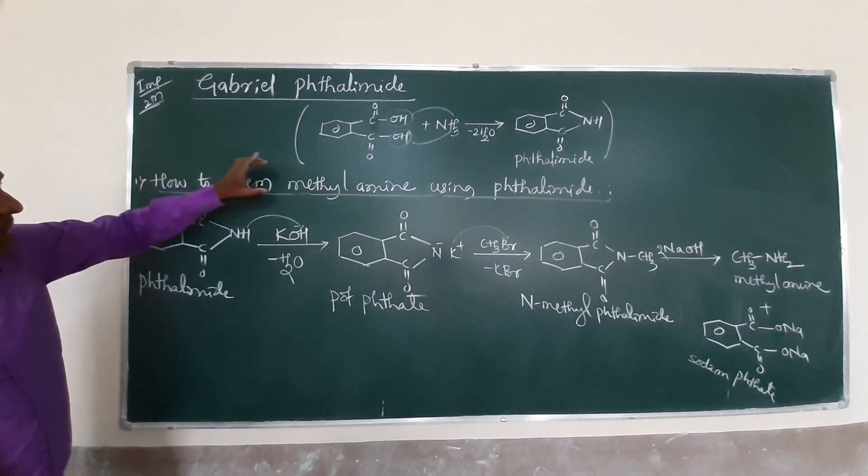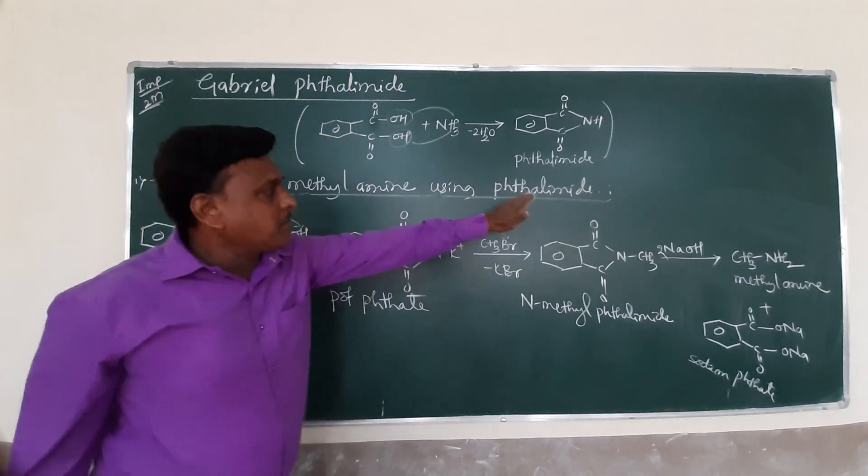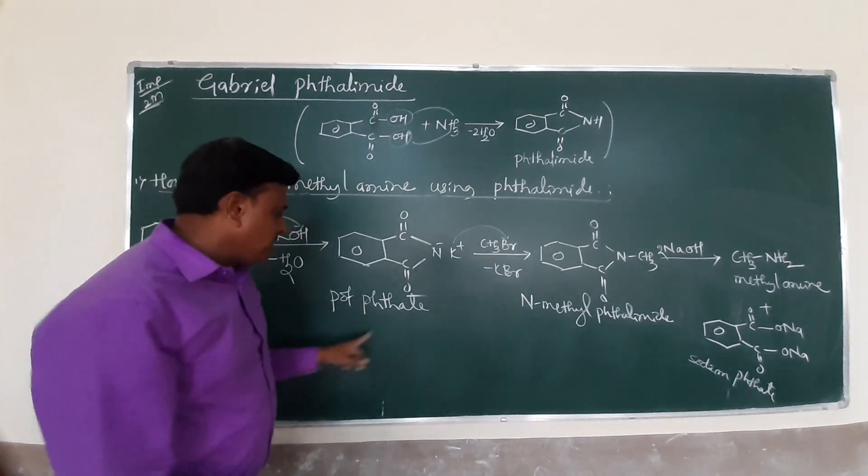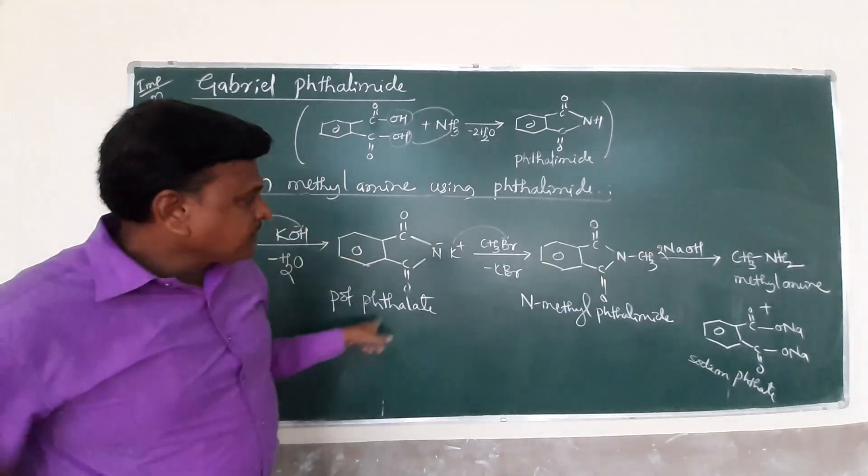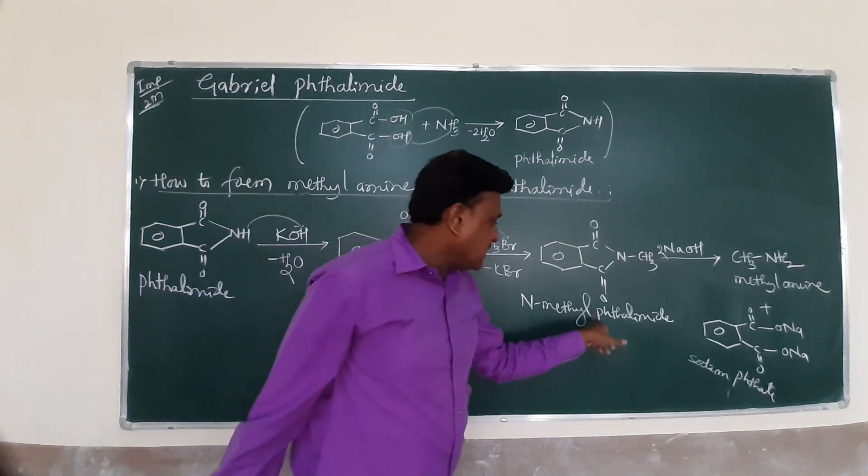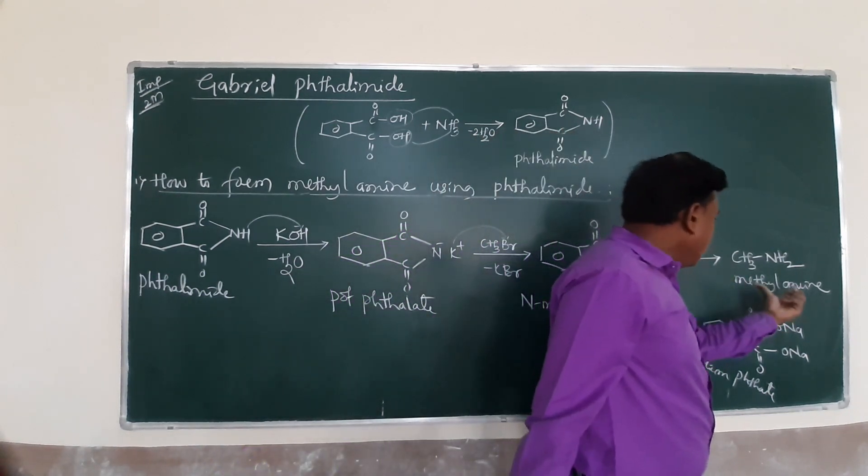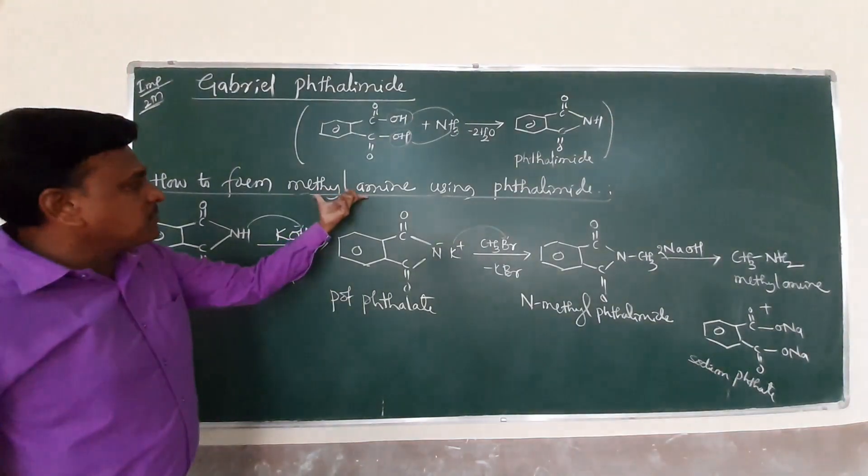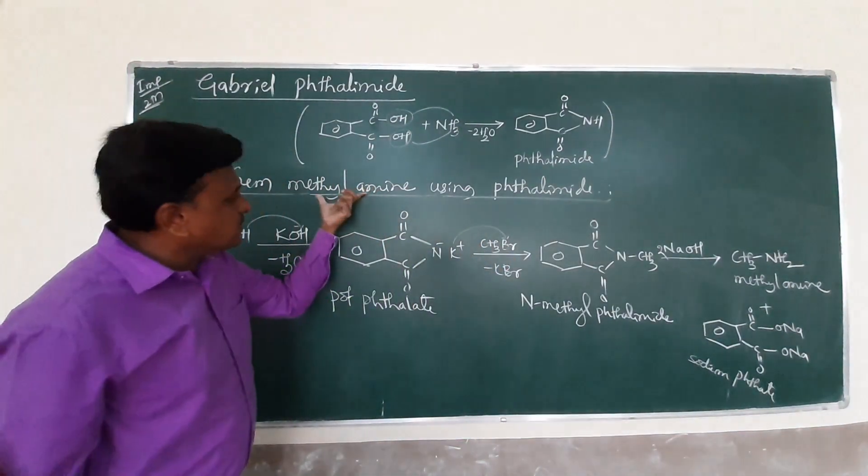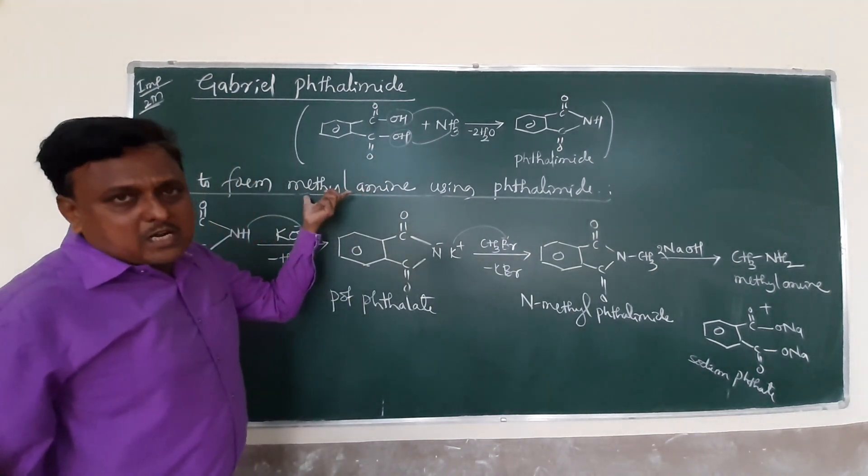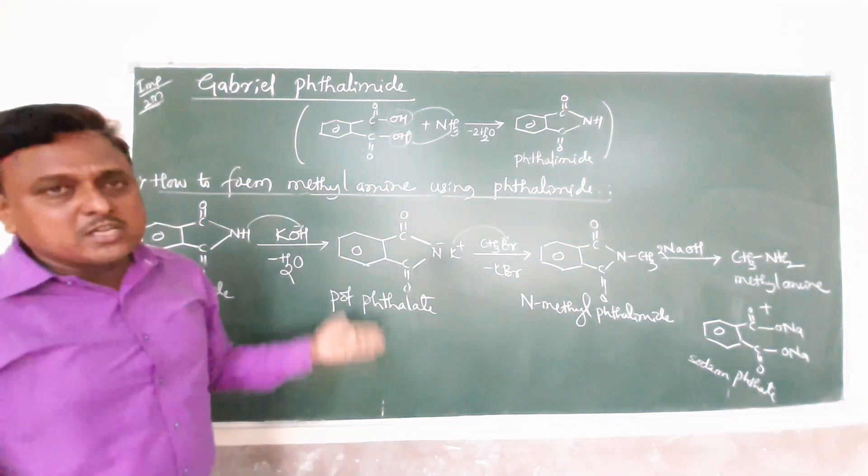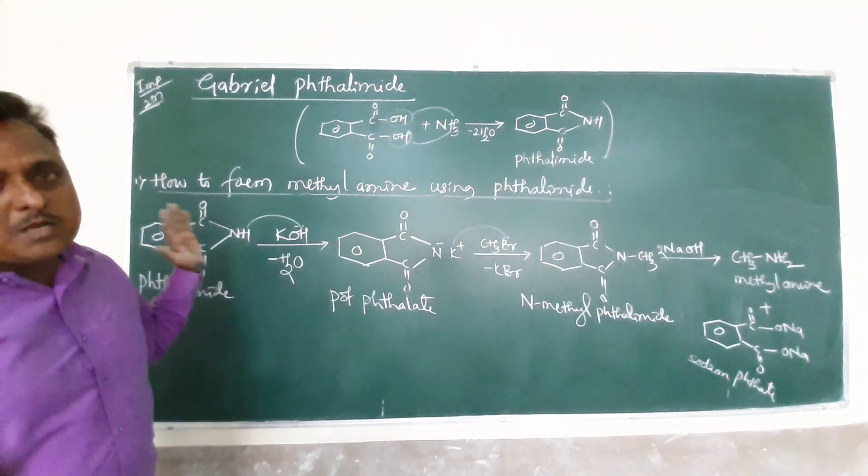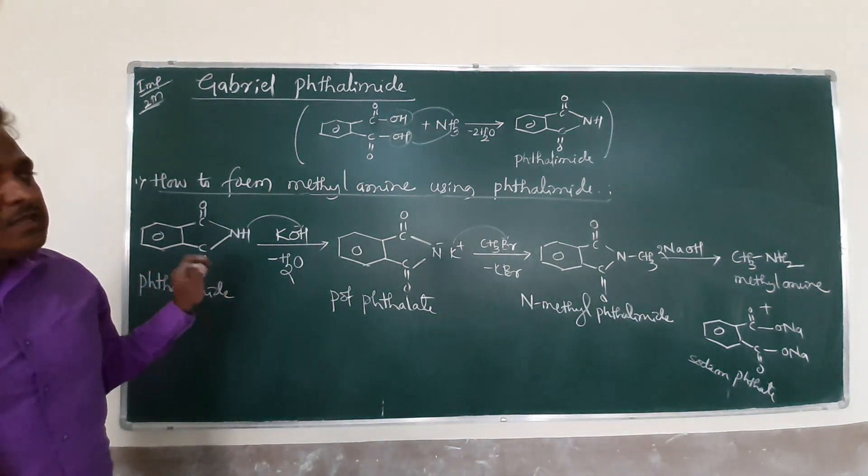How to prepare methyl amine using phthalimide? Phthalimide reacts with alkali to form potassium phthalate. Potassium phthalate reacts with methyl bromide to form N-methyl phthalimide, and it reacts with alkali to form methyl amine. You may have to practice more. In the place of methyl amine you can use ethyl amine. You can use ethyl bromide, propyl amine, propyl bromide. Just change the alkyl groups, you can get different alkyl amines, especially primary aliphatic amines. Gabriel does not help us to prepare aromatic amines because it undergoes steric hindrance.